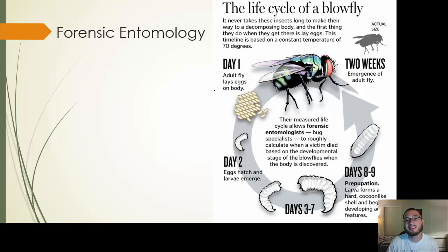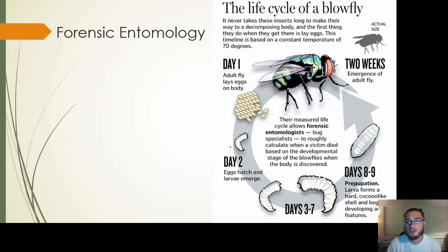Day one — almost immediately, as soon as a person dies and becomes a corpse — and this goes for any corpse, whether it's a mouse, a person, or a pig — those flies pick up on something being dead and they lay eggs. By the second day, those eggs hatch and you have larvae with hooks in their mouths that start to tear at the flesh and begin eating. From days three to seven, we see different-sized larvae, which we call instars — first instar, second instar, third instar.